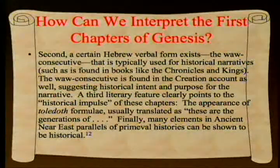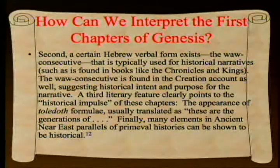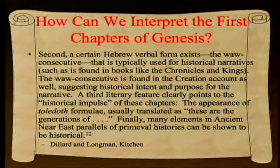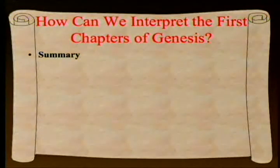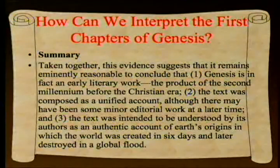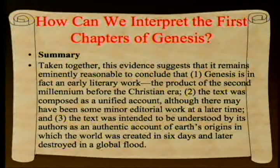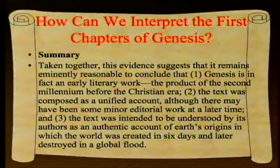A third literary feature clearly points to the historical impulse of these chapters: the appearance of Toledoth formulae, usually translated 'these are the generations of.' Many elements in ancient Near Eastern parallels of primeval histories can also be shown to be historical. Taken together, this evidence suggests it remains eminently reasonable to conclude: one, Genesis is an early literary work, the product of the second millennium B.C.; two, the text was composed as a unified account, although there may have been some minor editorial work later; and three, the text was intended as an authentic account of Earth's origins in which the world was created in six days and later destroyed in a global flood.